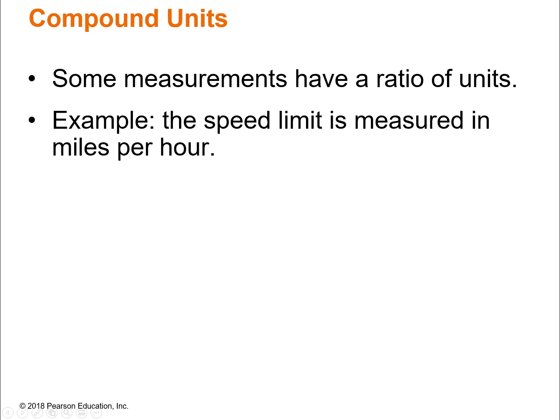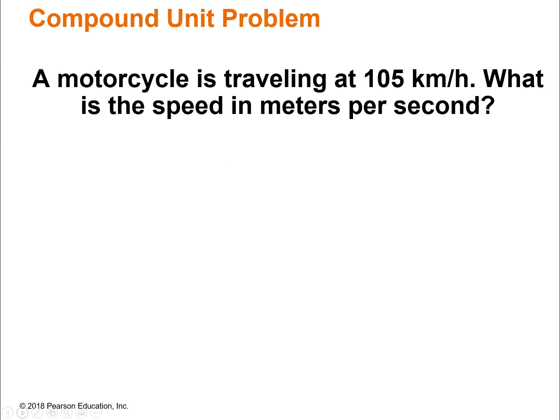A spin-off of metric-metric conversions is compound units. Some measurements have a ratio of units — an example we all know is the speed limit. In the U.S. it's miles per hour; pretty much everywhere else it's kilometers per hour. That's a compound unit: the number of miles for every hour. Let's do a compound unit problem where we convert 105 kilometers per hour to meters per second — converting kilometers to meters and hours to seconds.